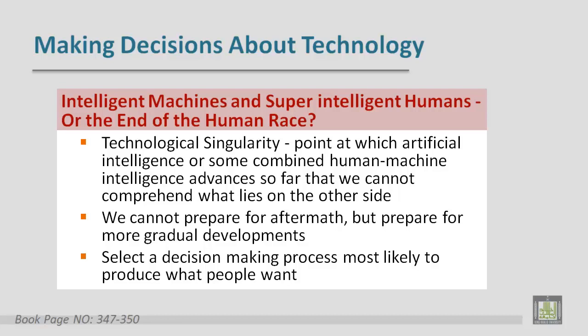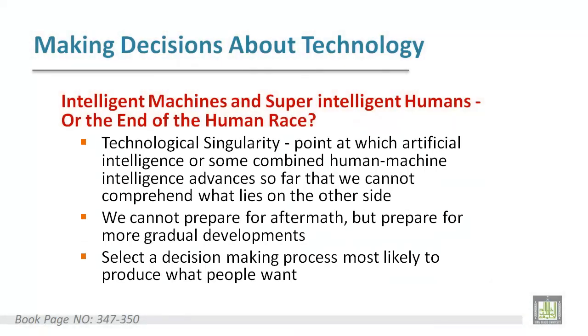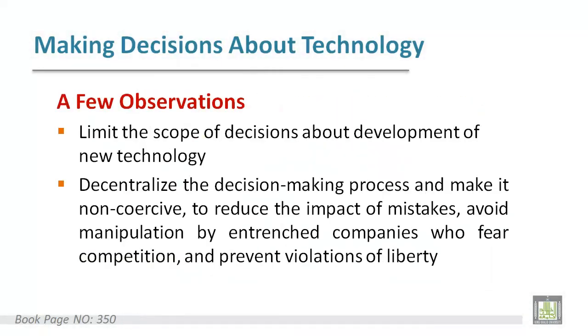To make a decision about technology, people's wants and needs must be considered. So to decide about the technology, you have to try to satisfy the people's wants, needs, and desires. Here are some observations about decision-making regarding technology.